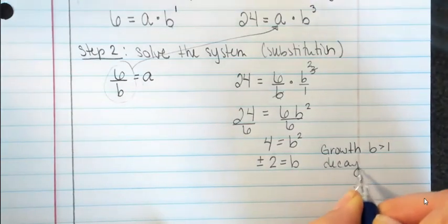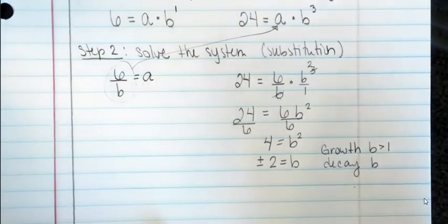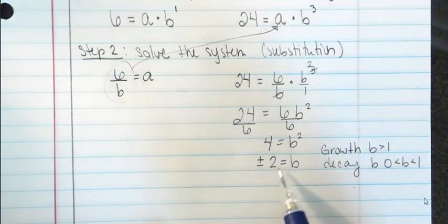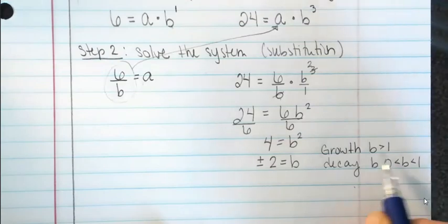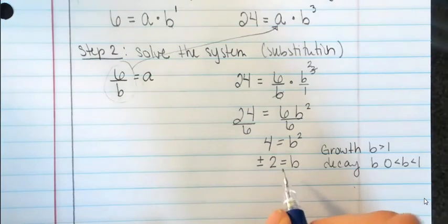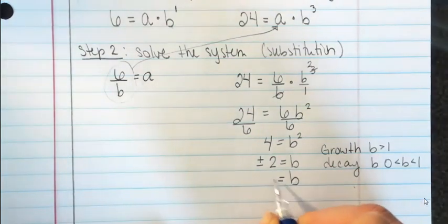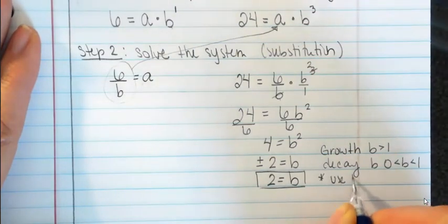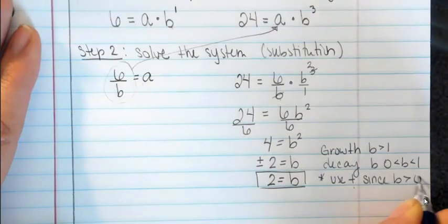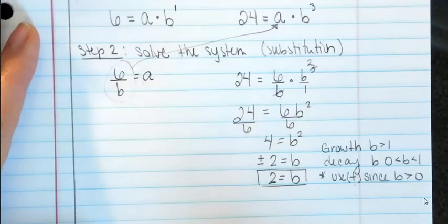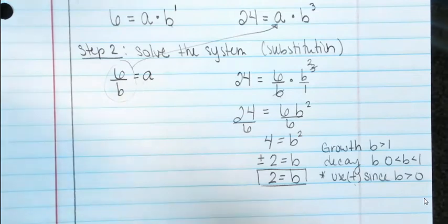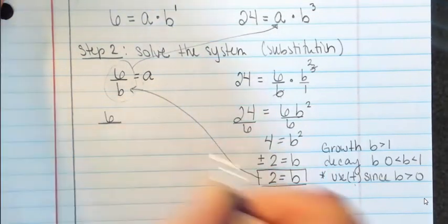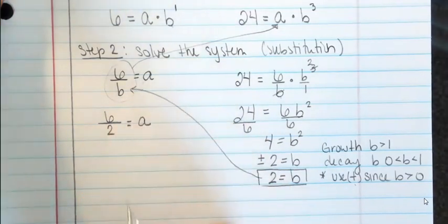Actually, b has to always be positive — it's the a that can be positive or negative. So we're going to say b is positive, meaning b equals 2. Throw away the negative. Write yourself a note: use positive since b must be greater than 0. Now I can plug that b back in to get a. So a equals 6 divided by b, which is 2. So a equals 3.